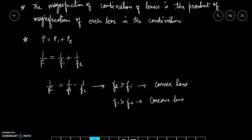And what if F1 is equal to F2? One is convex, one is concave lens. Both have exactly the same focal length. So in this case what will be the value of capital F? Infinity. And power of the lens will be zero. It is going to behave like a plain glass plate. So the power of the combination will be zero.